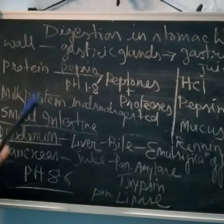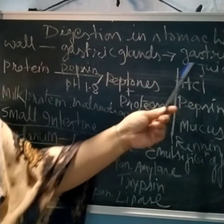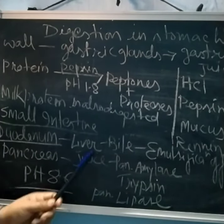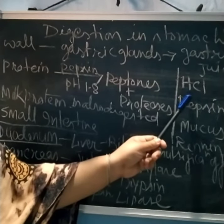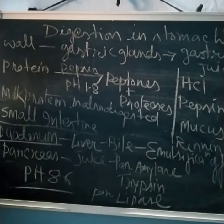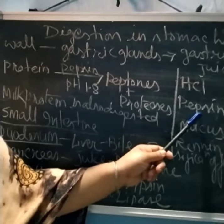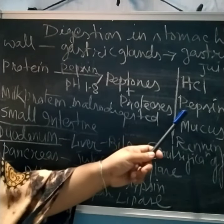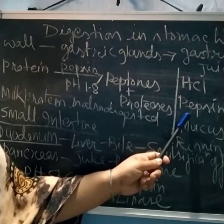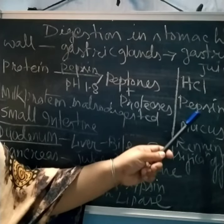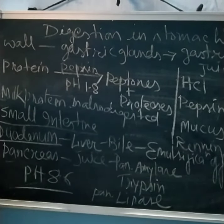Now, the function of hydrochloric acid (HCl) is that it provides an acidic medium to the stomach and it activates pepsin. Pepsin is first secreted in an inactive form, and when it comes in contact with HCl it becomes activated.